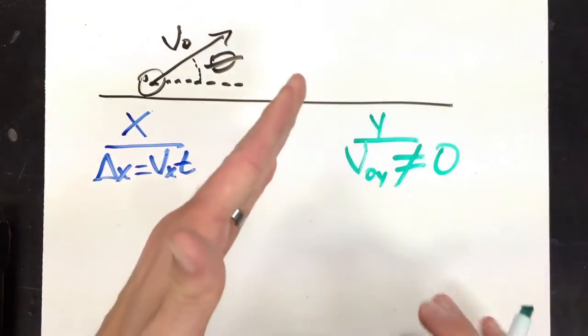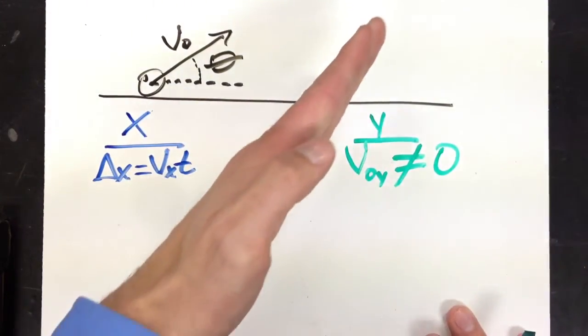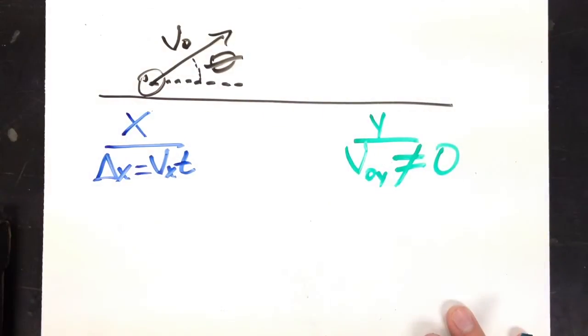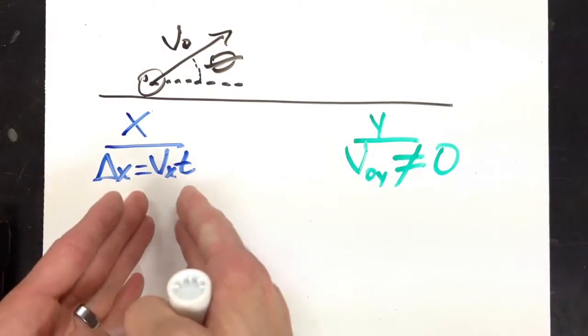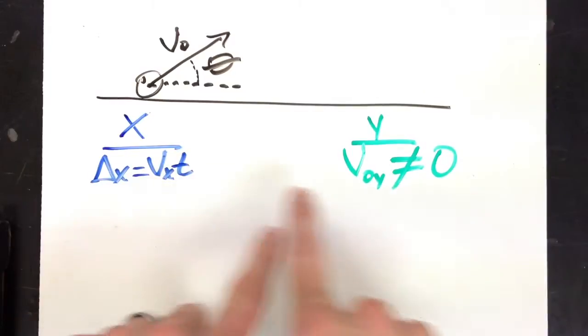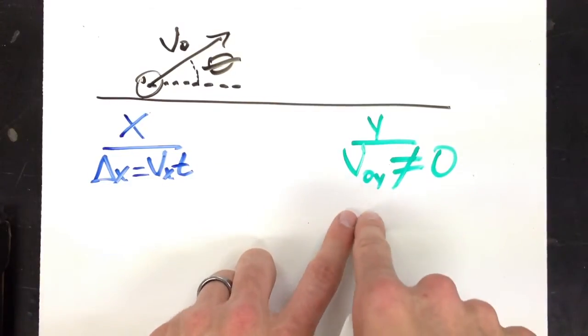Because it's fired at an angle. It rises up. So how do we go about figuring out what is the x? What is the y? The initial y?